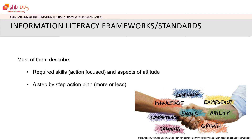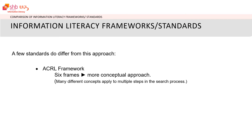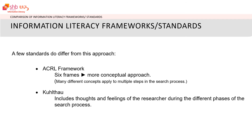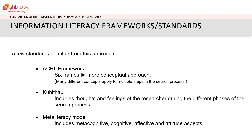Most of these frameworks describe the required information literacy skills and attitude aspects, and in doing so they usually more or less follow a chronological order in the search process. Some exceptions: the ACRL Framework consists of six frames with a more conceptual approach, and these six frames have no chronological order but are arranged alphabetically. The Kuhlthau model also includes research into thoughts and feelings at different stages of the search process, and the meta-literacy model contains meta-cognitive and affective elements.